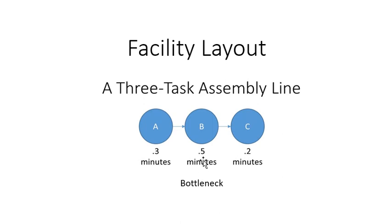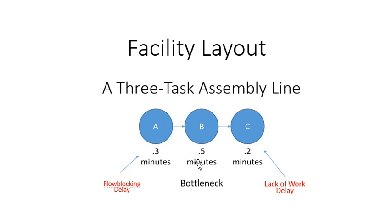Identify the bottleneck — it's the one with the longest amount of time. Because of that, two other things pop up. For the person doing step A, they finish their task in 0.3 minutes. In steady state flow, the person doing step B takes half a minute. Whenever person A finishes their task, they're just waiting before they can hand it off to person B. It takes 0.5 here, it only takes 0.3 for A, so they're waiting 0.2 minutes. We call that a flow blocking delay — the flow is blocked because of something that's going on.